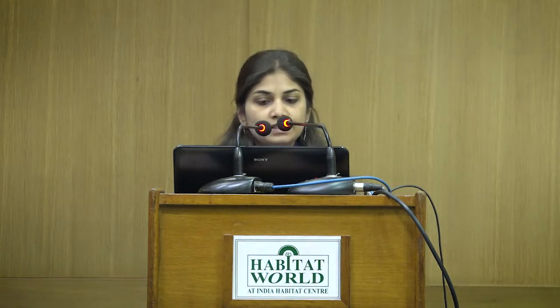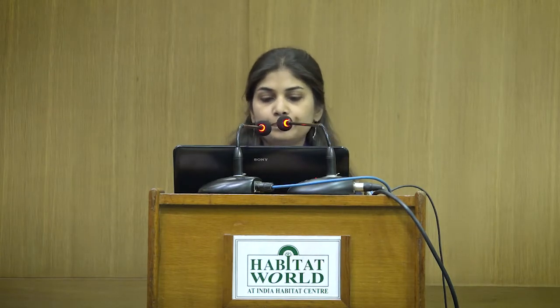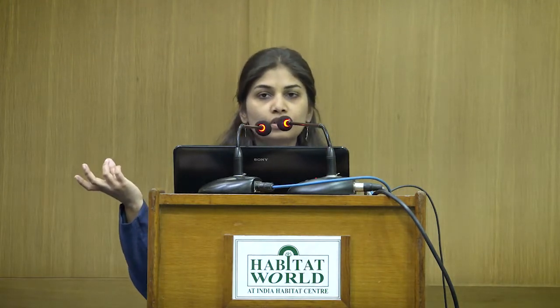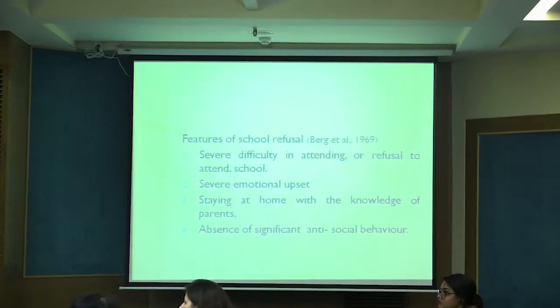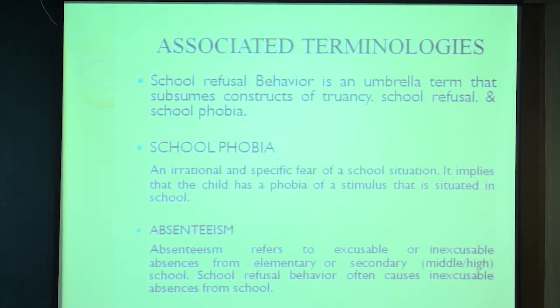Another way of understanding school refusal, suggested by an earlier author, is severe difficulty in attending or refusal to attend school — the child may also leave school early. There is severe emotional upset, and the child stays at home with the knowledge of parents. When we refer to school avoidance or school refusal, we are talking about it happening with the parents' knowledge. There is another aspect — truancy — in which parents may not be aware the child is not attending school. Mostly when we refer to school refusal, there is an absence of anti-social behavior, it is known to the family, and is sometimes endorsed by them.